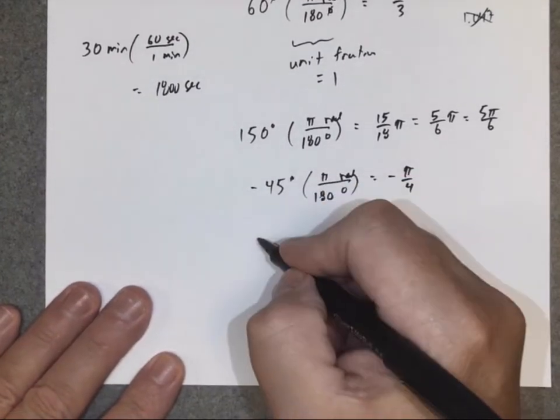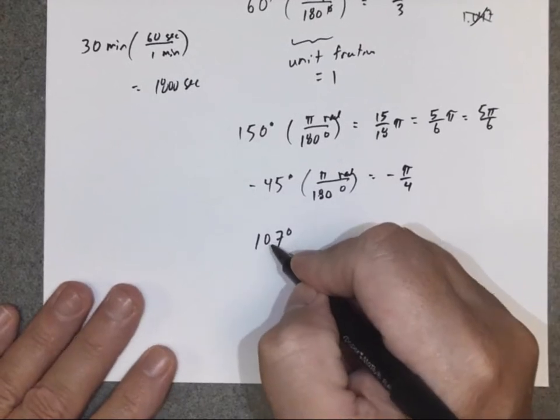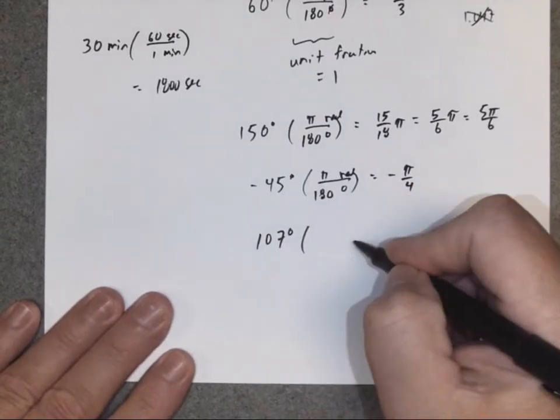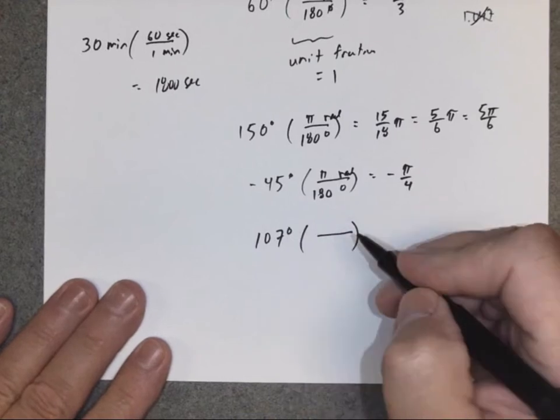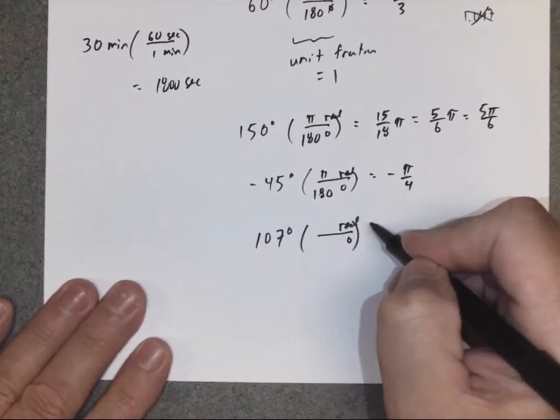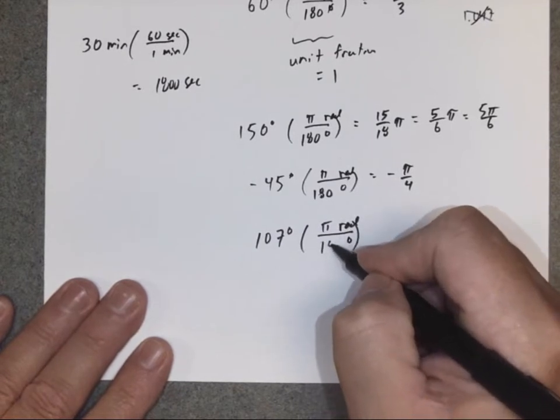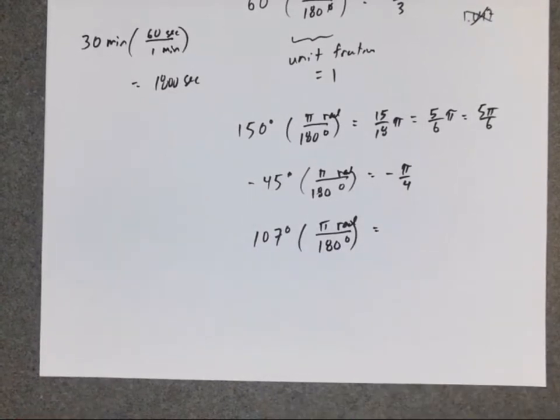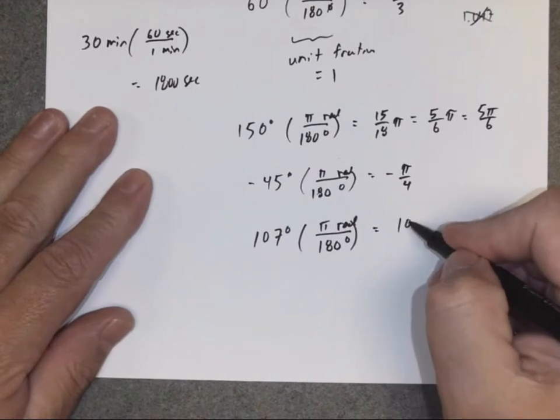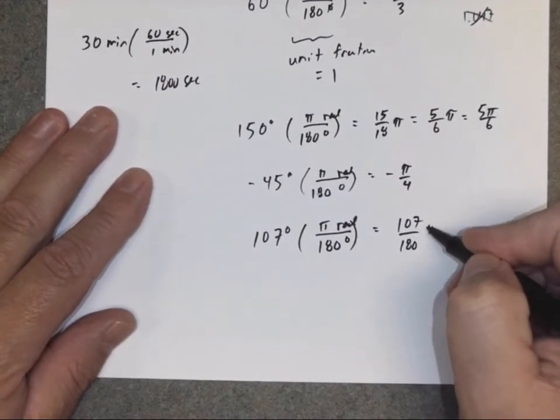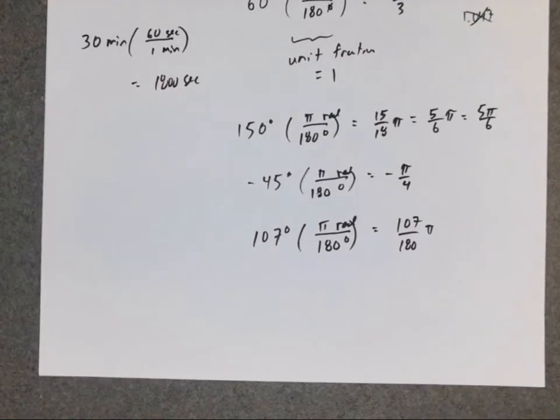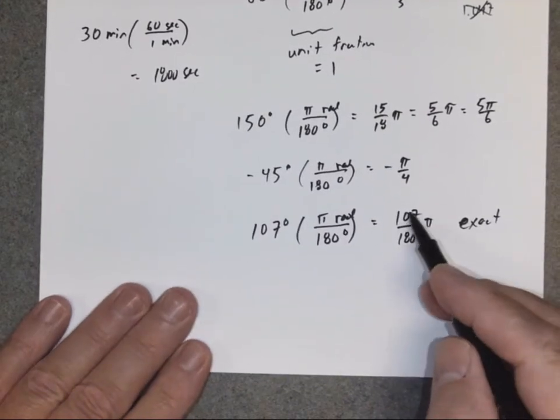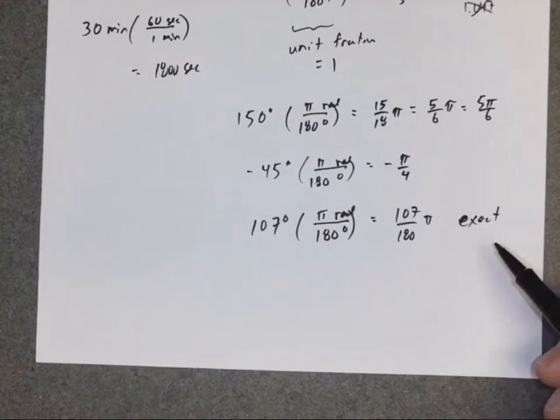Now here's the example. If they gave me this problem, I'll explain in a minute. So I'm going to convert 107 degrees into radians. Start with degrees, degrees in the bottom, radians in the top. π radians over 180 degrees. Now this is an example. If I were to look at 107 over 180, it does not reduce, does not simplify. I could write my answer 107 over 180 times π. That would be an exact answer.